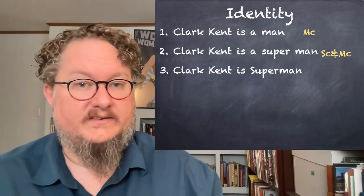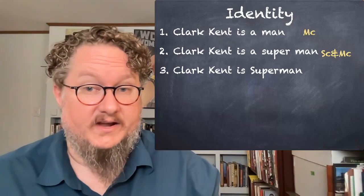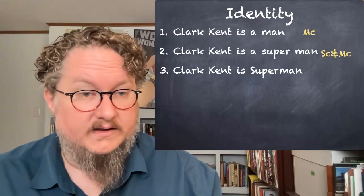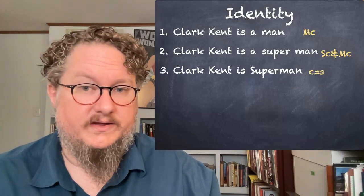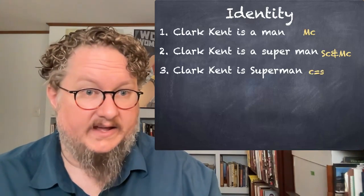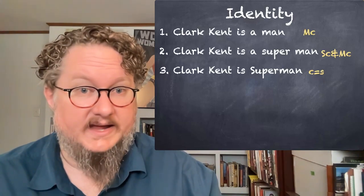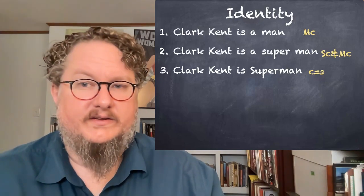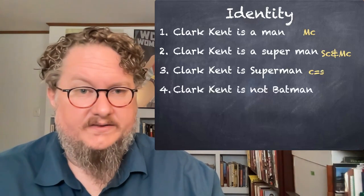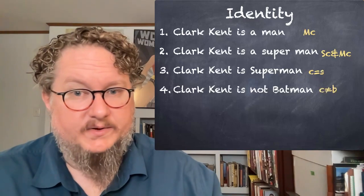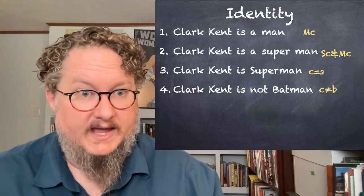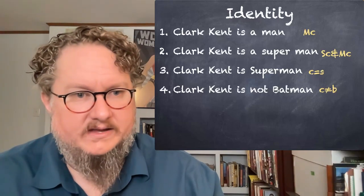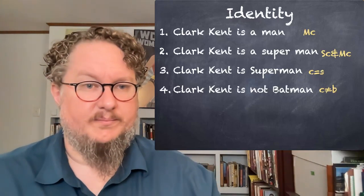But with the expression 'Clark Kent is Superman,' it's different. Clark Kent is a proper name, and Superman is also a proper name. So we would use the expression C equals S — the identity predicate applied to C and S. Similarly, 'Clark Kent is not Batman' we would express with the negation of the identity symbol, with lowercase b being a constant for the proper name Batman.